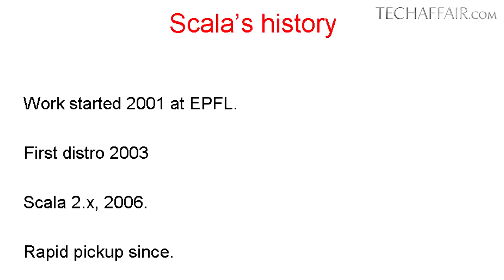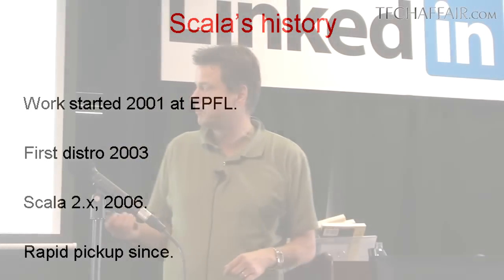At the time, Java was really king of the hill — the big, cool language that everybody was using. I said, well, five years from now things will be different, the pendulum will swing back, and that's what eventually happened. So the first distribution we had was in 2003, there was a redesign, and the Scala 2 series started in 2006. Ever since 2006 we have seen fairly rapid pickup.